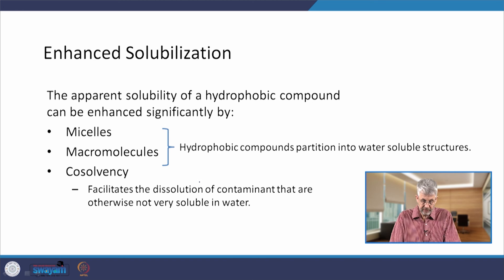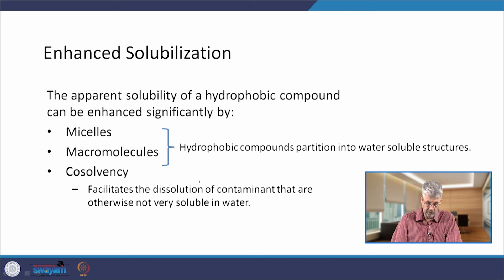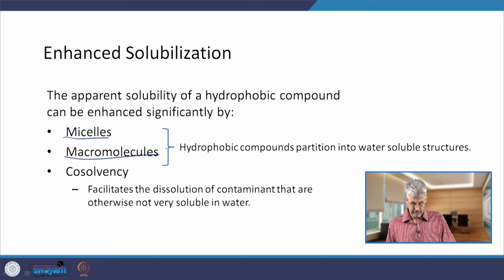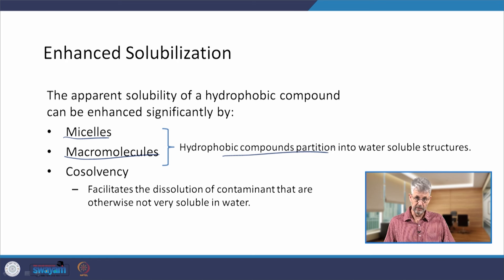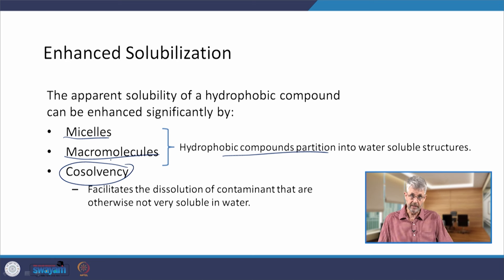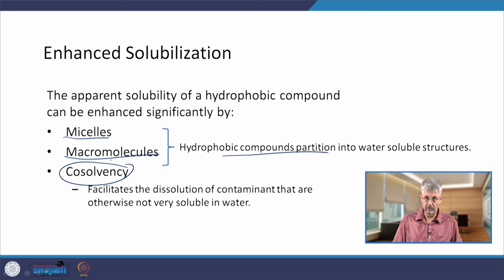These agents work because the underlying processes are related to formation of micelles in the case of surfactants. In the case of cyclodextrin, we're talking about macromolecules into which these hydrophobic contaminants can partition. Hydrophobic compounds partition out of the water into either micelles or the cyclodextrin molecule. With co-solvents, the solubility is enhanced by changing the water phase properties to be more suitable for dissolving hydrophobic contaminants by adding a co-solvent like ethanol or isopropyl alcohol.